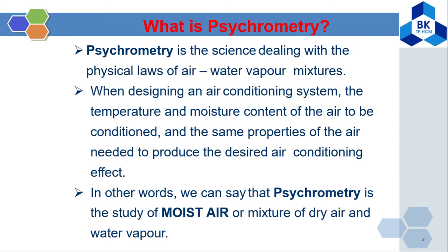What is psychrometry? Psychrometry is the science dealing with the physical laws of the air and water vapor mixture. The normal air that you breathe every day surrounding you is not only dry air, but it always includes part of water in the form of vapor. So the normal air surrounding you is an air and water vapor mixture — that is what we call psychrometry.